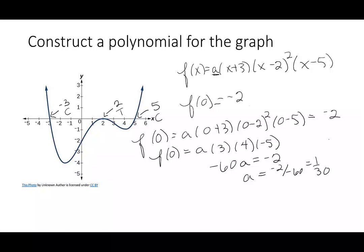So I can solve for the coefficient by using some other information. Sometimes it's the y-intercept, sometimes it might be just another point that we're given. So here f(x) equals positive 1 over 30, (x plus 3), (x minus 2) squared, and (x minus 5).